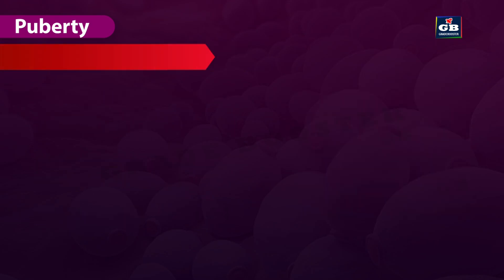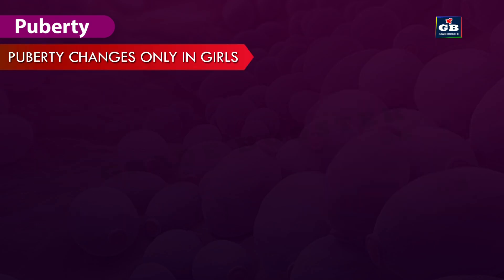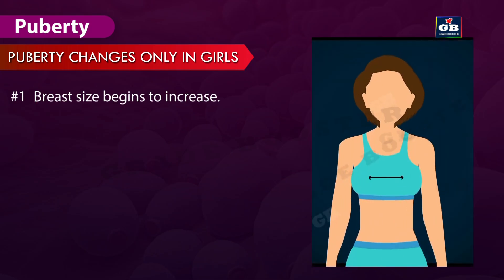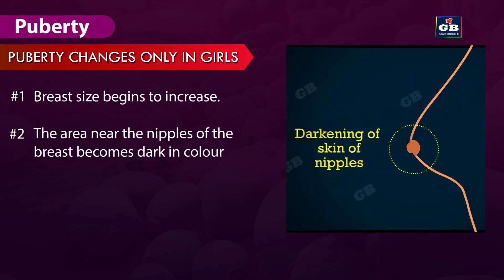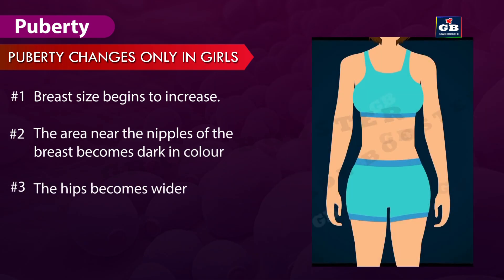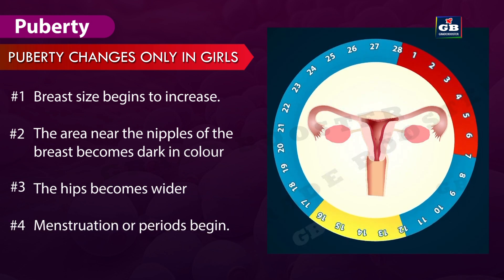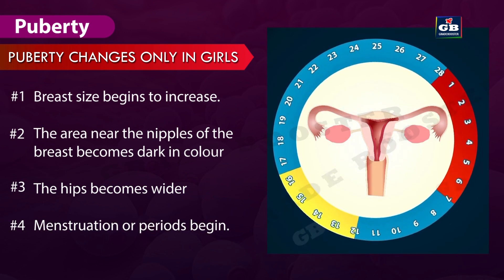Changes that take place only in girls during puberty: 1. Breast size begins to increase. 2. The area near the nipples of the breast becomes darker in color. 3. The hips become wider. 4. Menstruation or periods begin.